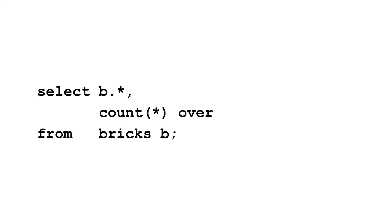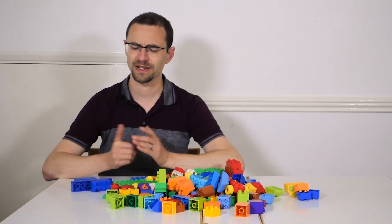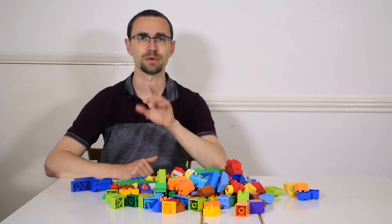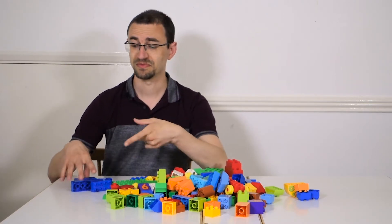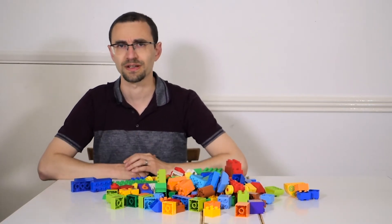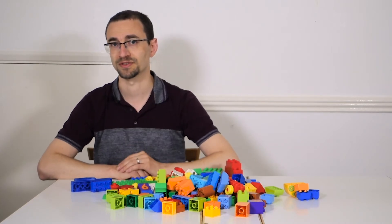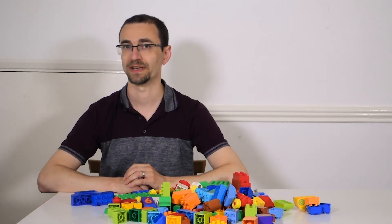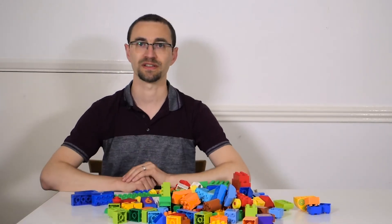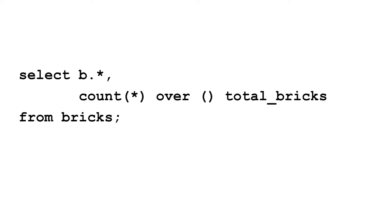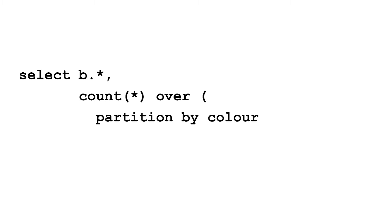Place the OVER clause after the COUNT to get the total number of bricks. But that's not what we wanted — we wanted to count how many bricks we have of each colour. To do this, you need to use the PARTITION BY clause. This works similar to GROUP BY, carving your data up into sets for each value in the columns. So to get the count for each colour, do PARTITION BY colour.